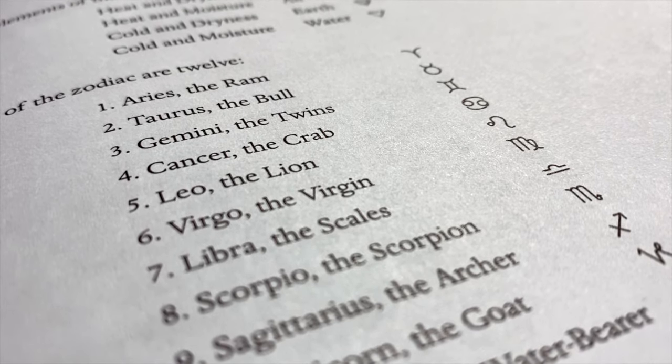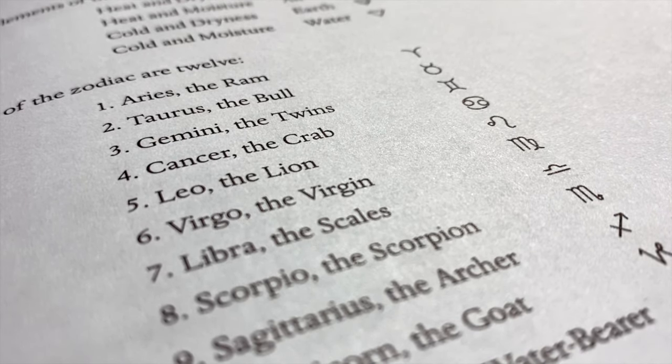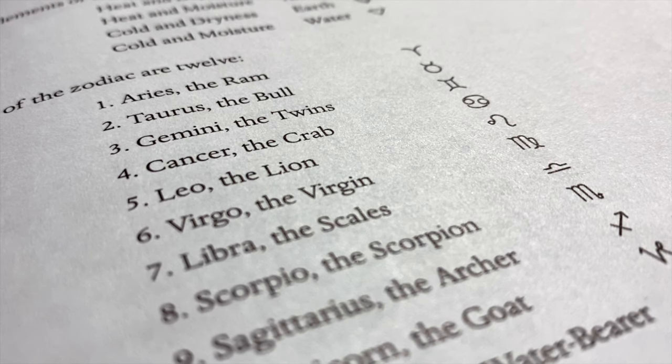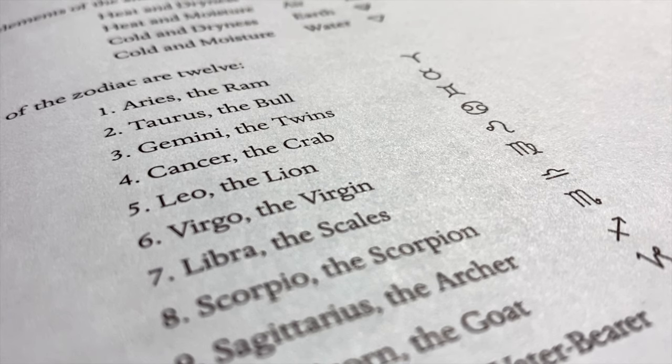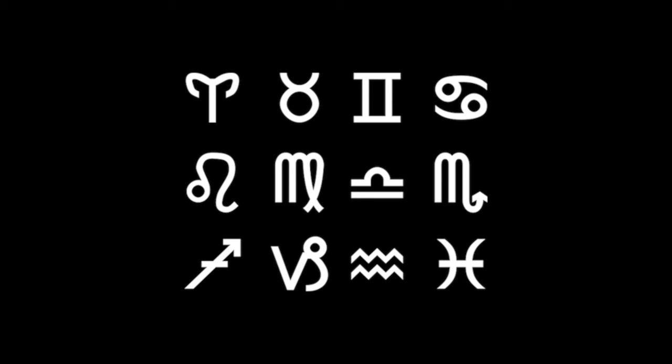Two: the signs of the zodiac are twelve. One, Aries, the ram. Two, Taurus, the bull. Three, Gemini, the twins. Four, Cancer, the crab. Five, Leo, the lion. Six, Virgo, the virgin. Seven, Libra, the scales. Eight, Scorpio, the scorpion. Nine, Sagittarius, the archer. Ten, Capricorn, the goat. Eleven, Aquarius, the water bearer. Twelve, Pisces, the fishes.